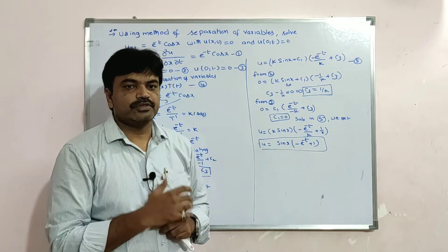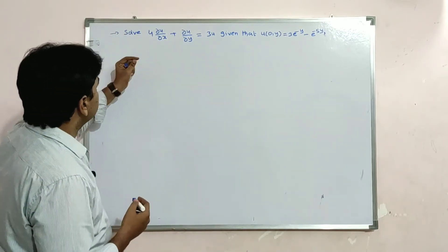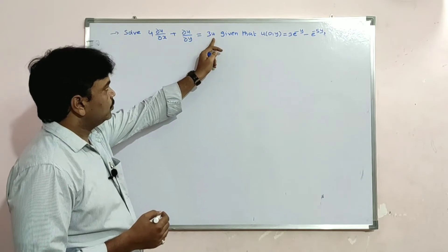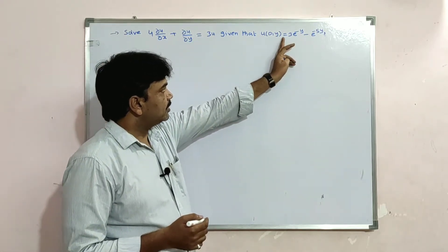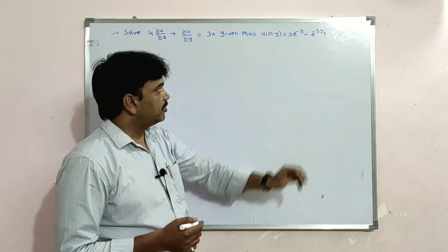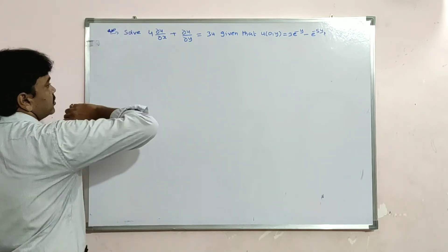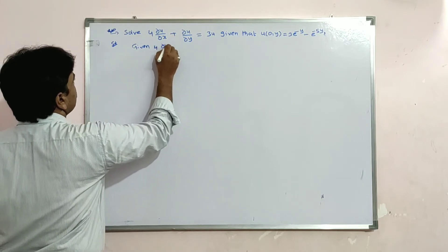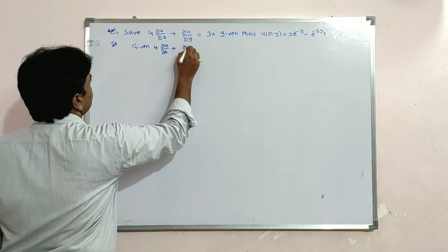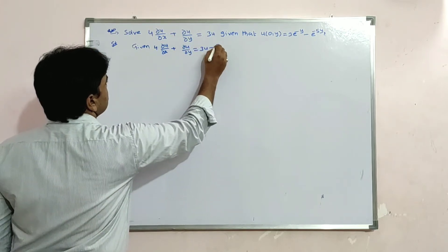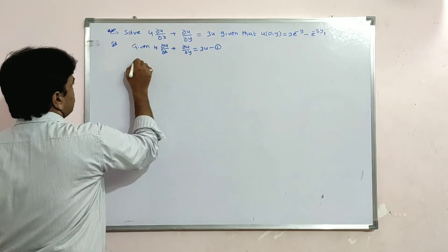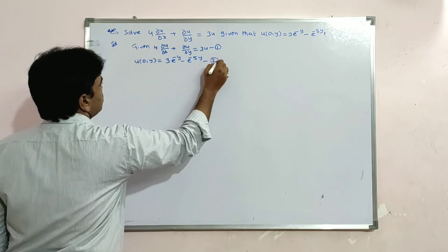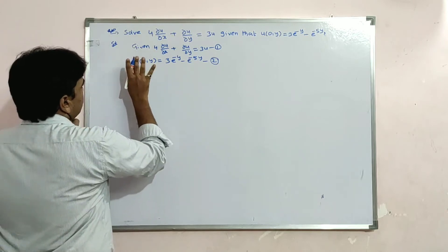Let us see another problem on the method of separation of variables. The problem is: 4·∂u/∂x + ∂u/∂y = 3u, with boundary condition u(0,y) = 3e^(-y) − e^(-5y). The given equation is equation 1 and the boundary condition is equation 2.